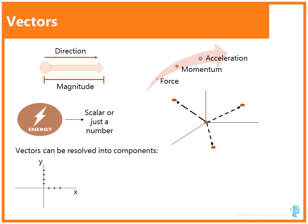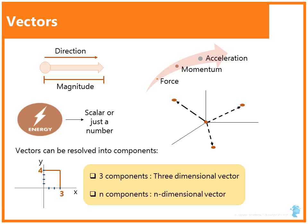Take a crude example. If you have a point in two-dimensional space, say 3,4, the vector has three units of x-axis and 4 units of y-axis. If we have three components, it becomes a three-dimensional vector and if we have a vector of n components, it becomes n-dimensional vector.